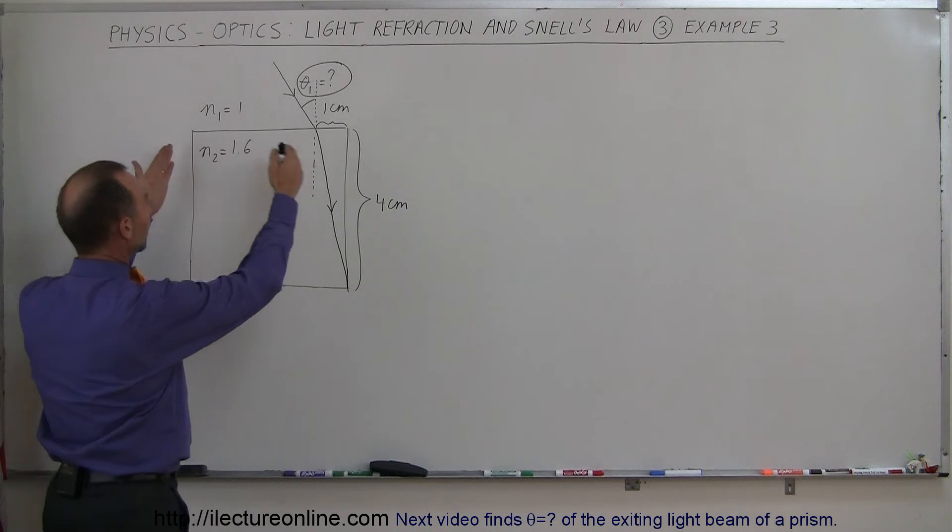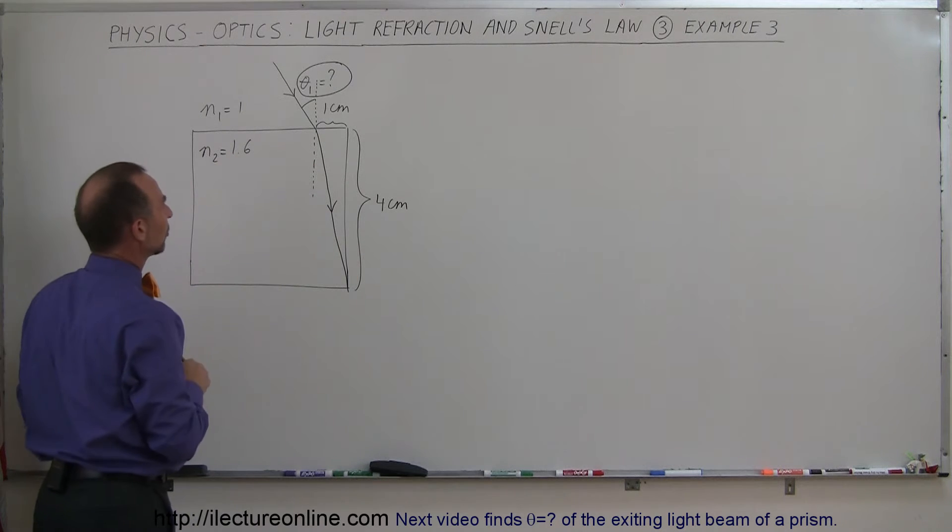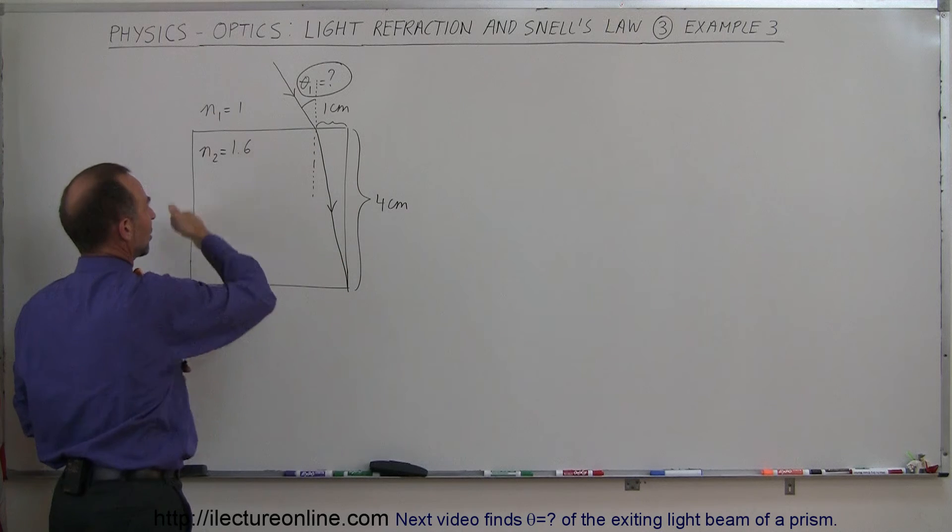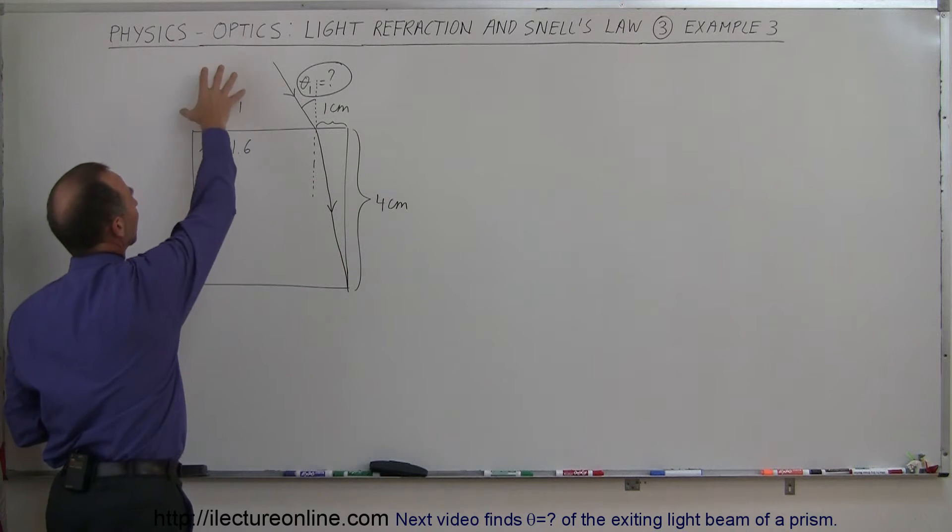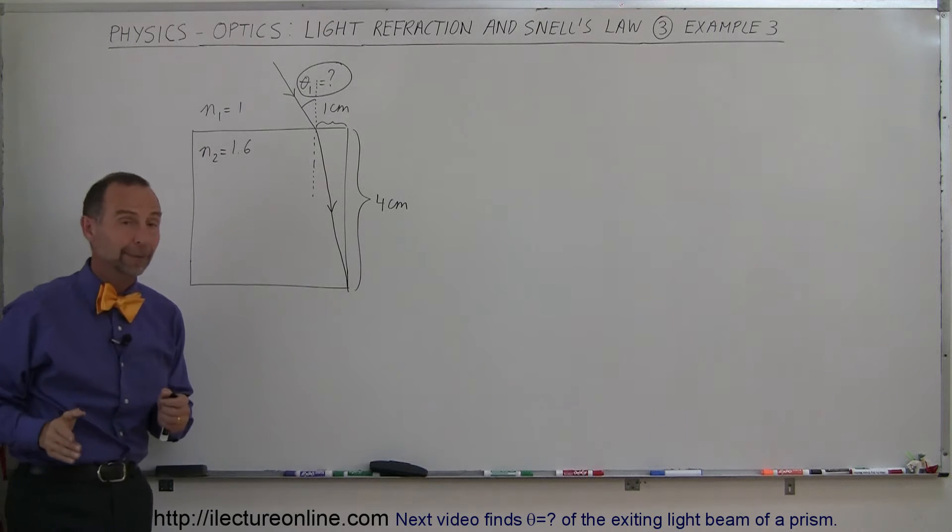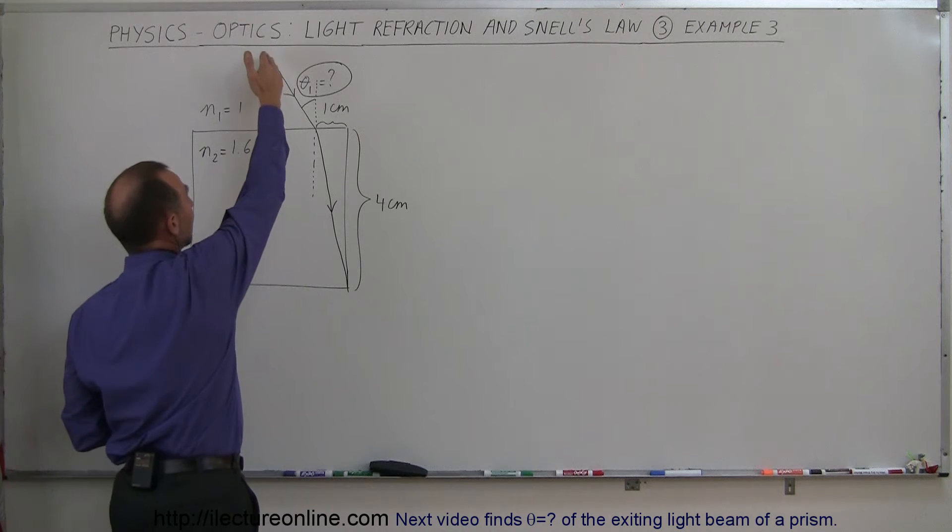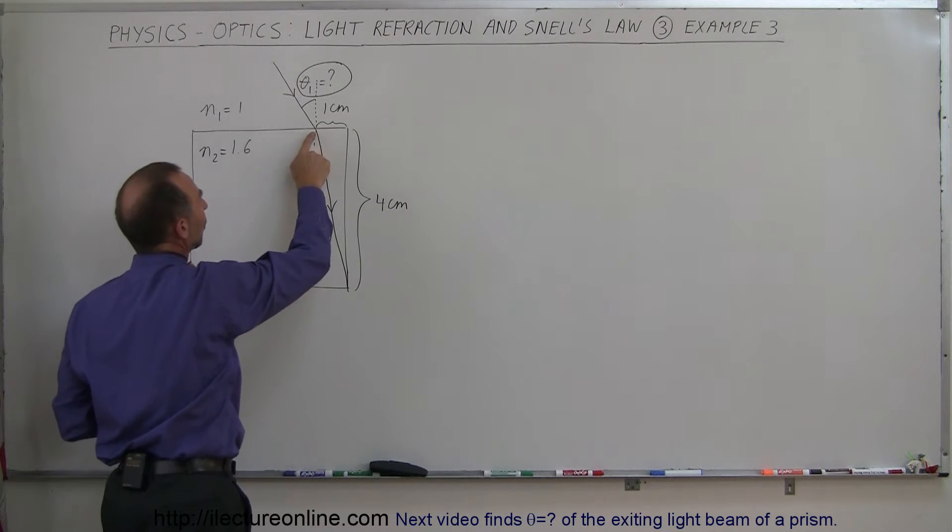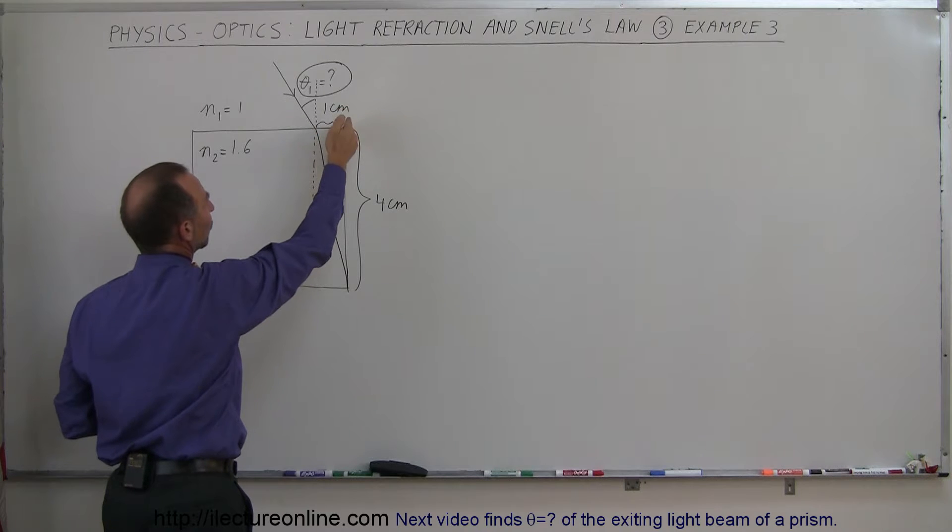So let's say we have a cube of glass, the index of refraction is 1.6, looks like the cube is 4 centimeters by 4 centimeters. Outside we have air with an index of refraction equal to 1.